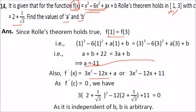Replace the found value of a into f'(x) to get the final form of f'(x). We know that f'(c) equals 0, so place the given value of c here. You'll see that the result is independent of b.